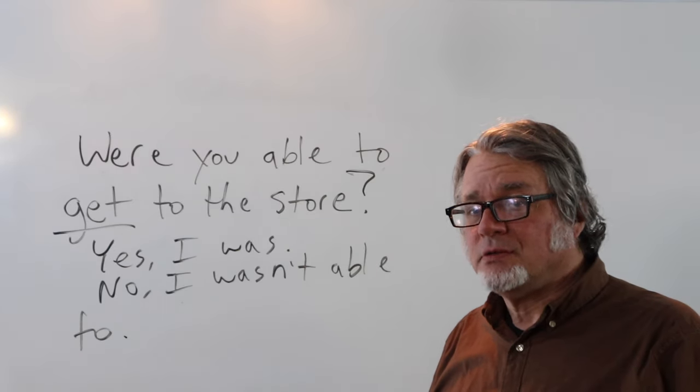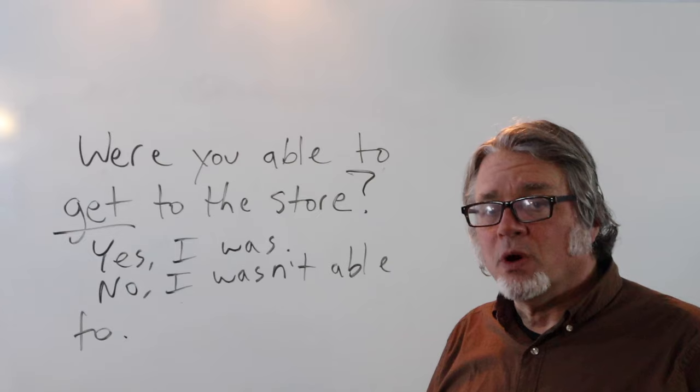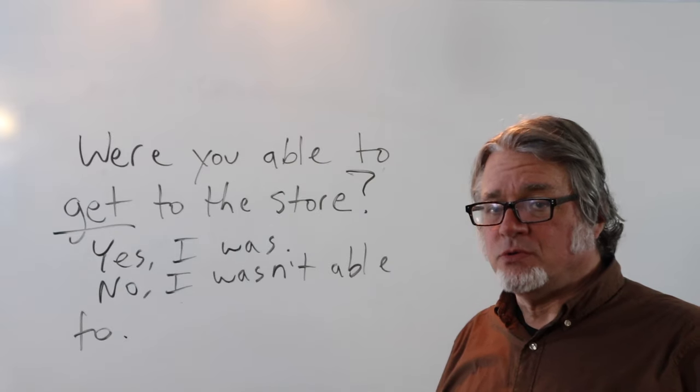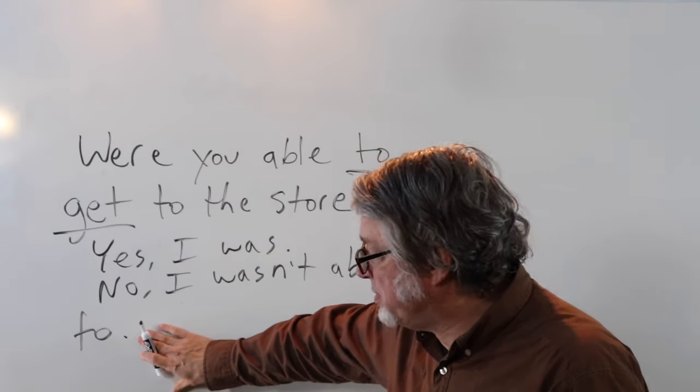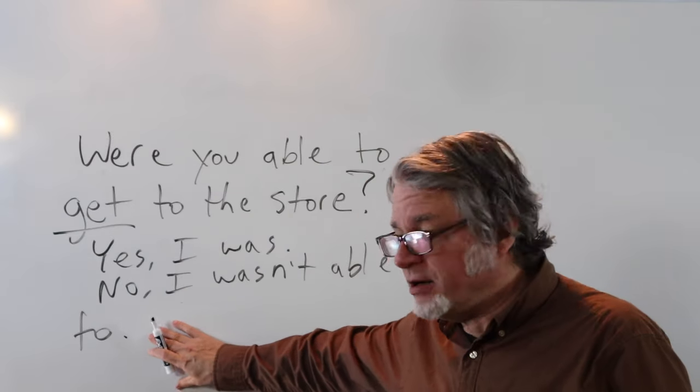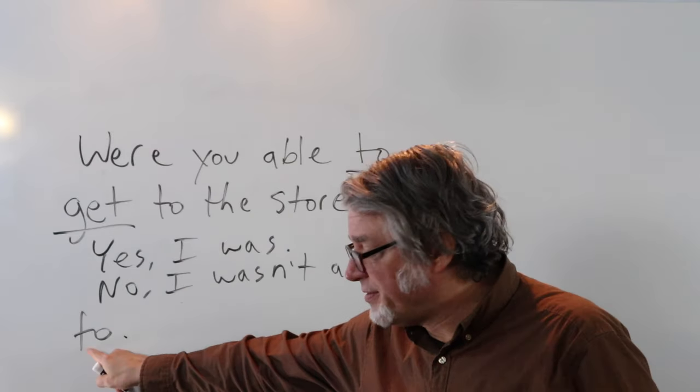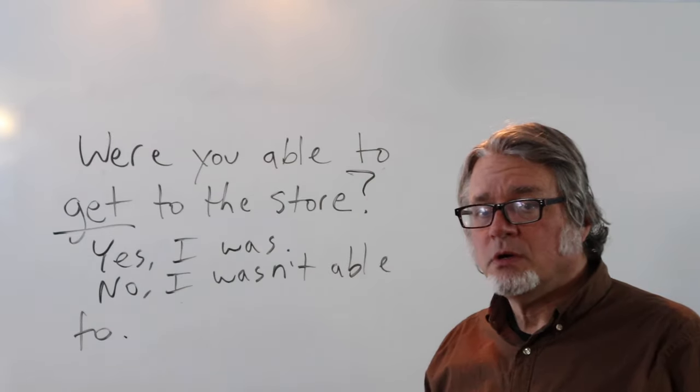When giving a negative answer in the past tense, you can say 'I wasn't able to' without putting the main verb at the end — just end with to. This is perfectly acceptable and natural.